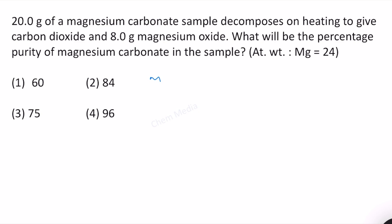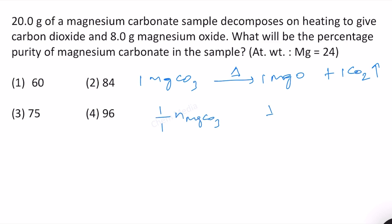Magnesium carbonate upon heating decomposes to magnesium oxide plus carbon dioxide. The stoichiometry here is 1:1:1, meaning one mole of MgCO₃ gives one mole of MgO and one mole of CO₂. We bring the coefficients to the denominator as stoichiometric moles, and we first find what mass corresponds to one mole of each.